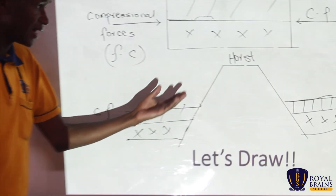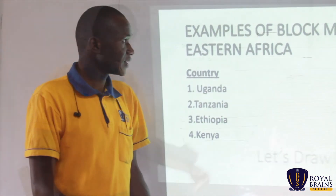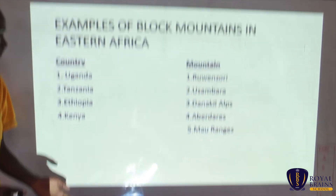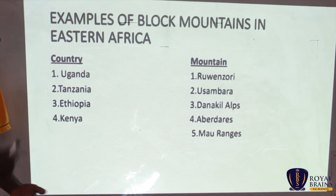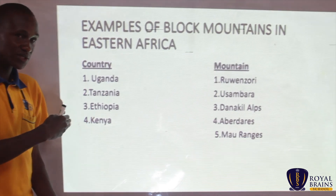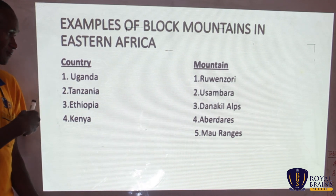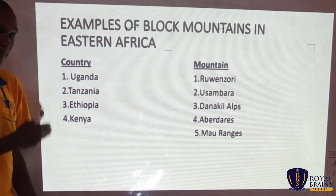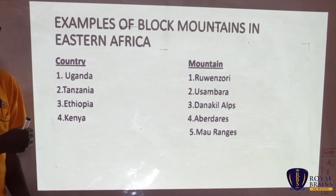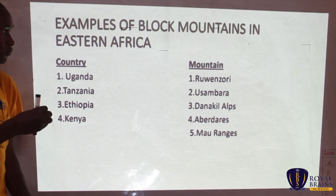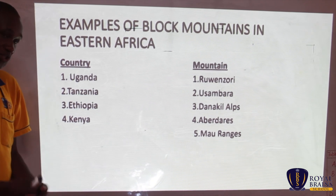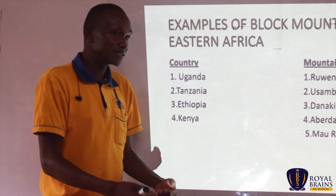Wherever we have this figure, it represents a block mountain. Let's look at some examples of block mountains, or horst mountains, in Eastern Africa. I'll name the country and the mountain. In Uganda, we have a good example: the Rwenzori Mountains, formed through faulting. In Tanzania, we have Mount Usambara — a good example of a block mountain. In Ethiopia, we have the Danakil Alps, a good example of a mountain formed through faulting. In Kenya, we have the Mau Ranges, also formed through faulting. Those are the examples of block mountains in Eastern Africa.